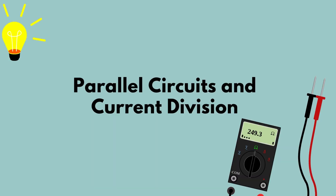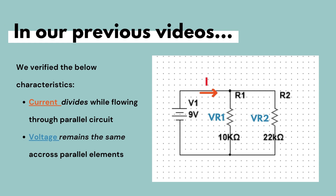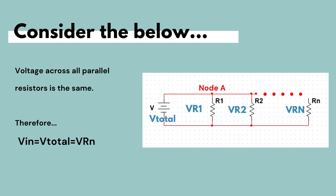As we know, current is divided in parallel circuits, so let's take a look at current division in parallel circuits and the derivation of the current divider rule, or CDR equation. Consider the circuit below with multiple elements in parallel — specifically, n resistors connected in parallel to the power supply.